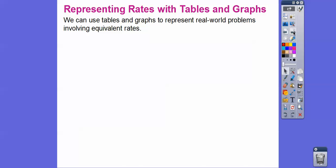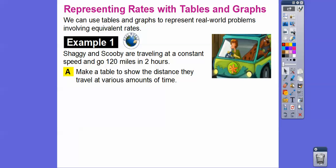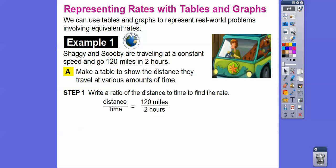We can use tables and graphs to represent problems that involve equivalent rates. Here's another one — Shaggy and Scooby are traveling at a constant speed and go 120 miles in two hours. We're going to make a table to show the distance they traveled at various amounts of time. First, write a ratio of distance to time to find the rate. Distance to time is 120 to 2. Let's get our unit rate by dividing both by 2 — we get 60 to 1, or 60 miles per hour.